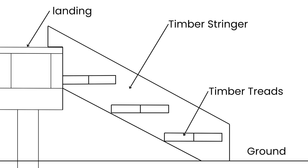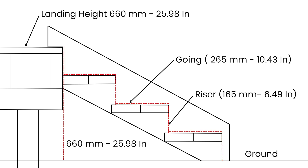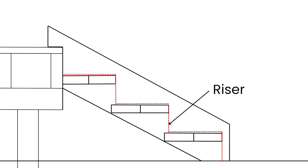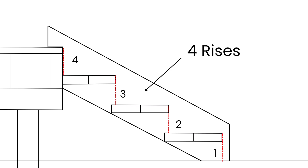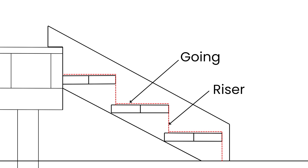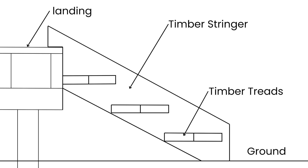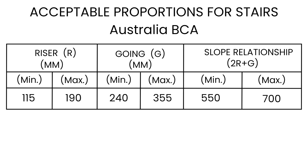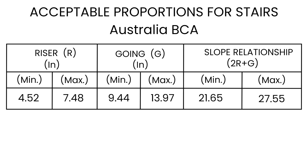The first step when building a set of stairs is to calculate the number of rises and goings. The riser is the height of each step and the going is the width of each tread. There needs to be an equal amount of rises in a set of stairs, and there's always one less going than the amount of rises. The rise and going are marked onto the timber stringer — the pieces of timber that run diagonally up the side of the stairs, bearing the weight of the treads. I've added a table to show the minimum and maximum sizes for stair treads and rises.